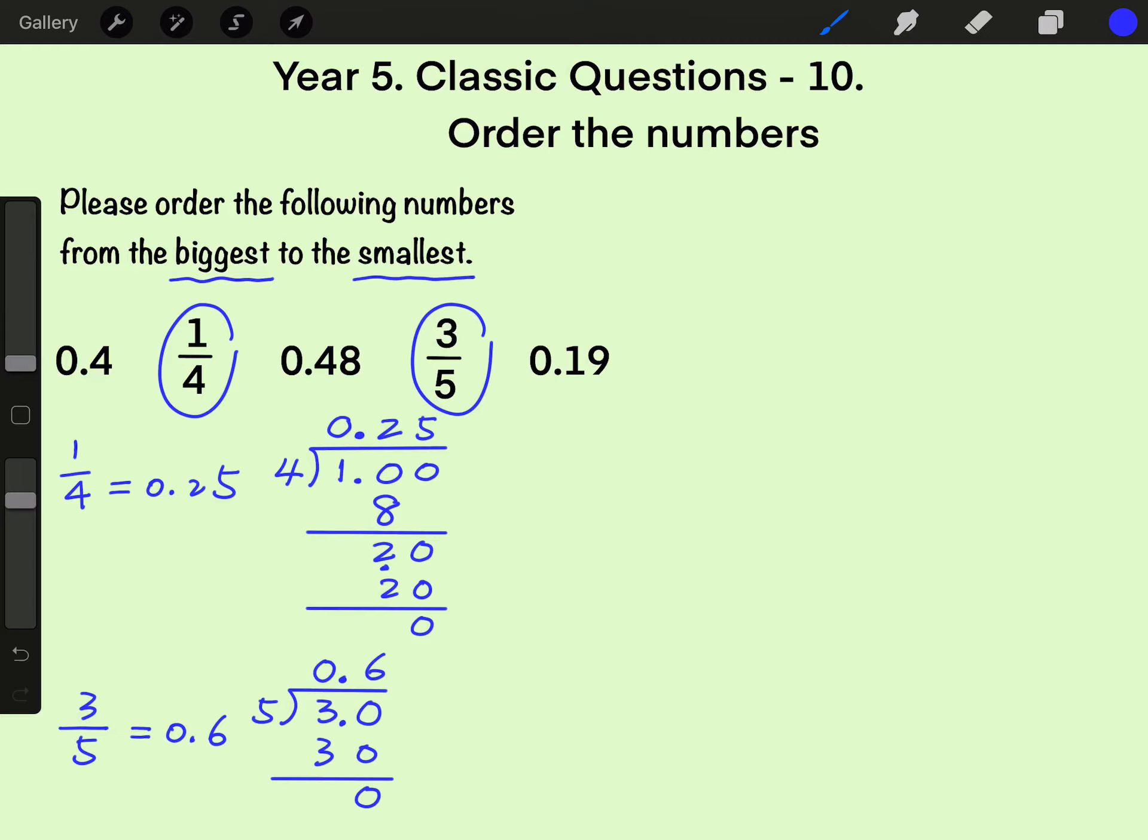Nice. Now we have a group of decimals: 0.4, and then one quarter equals to 0.25, next 0.48, then three fifths equals to 0.6, and at last 0.19.